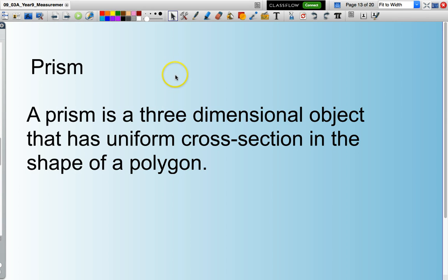A prism is a three-dimensional object that has uniform cross-section in the shape of a polygon. Just a couple of fairly complicated definitions but let's look at a couple of examples.